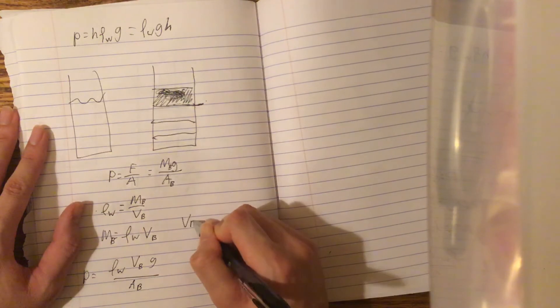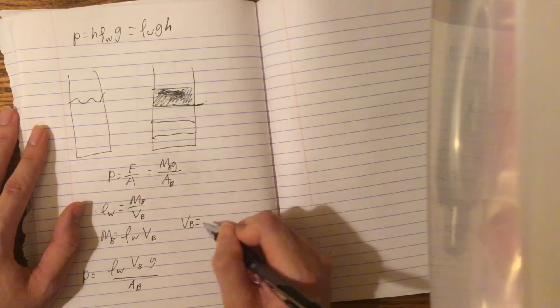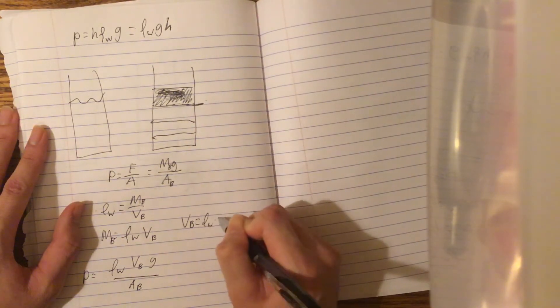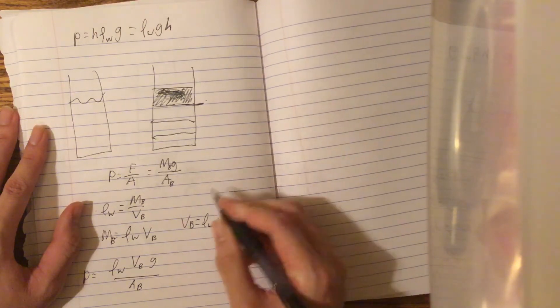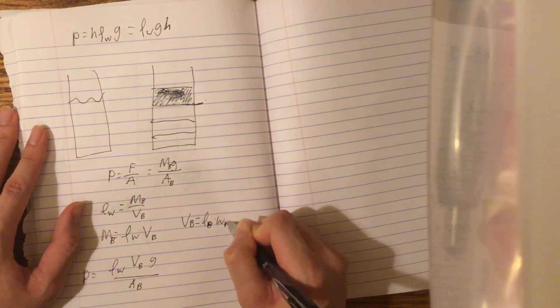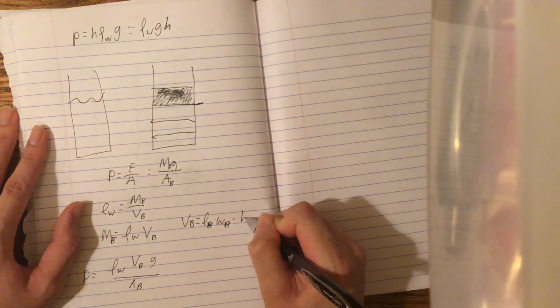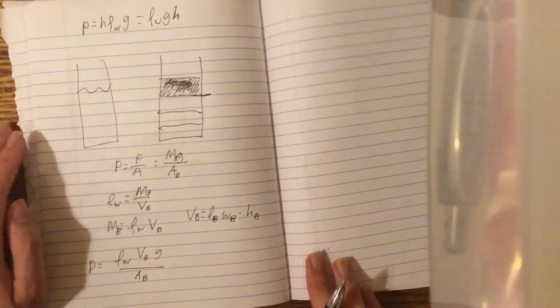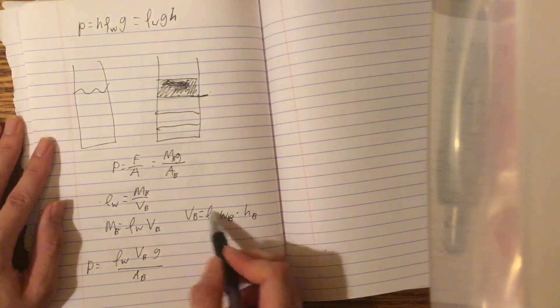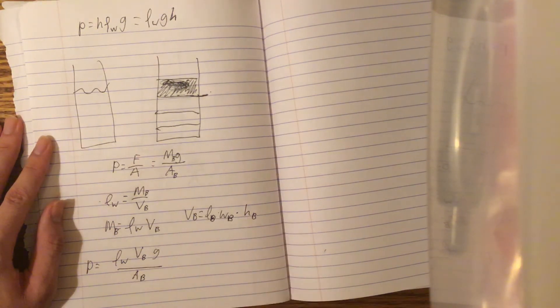Well, we know that the volume of the block is length of the block times width of the block, or whoops, times height of the block, because we can assume it's a rectangular prism. So we know this to be true.